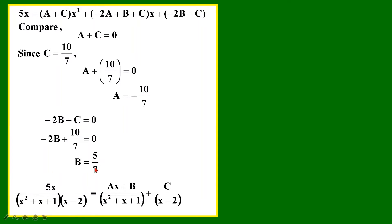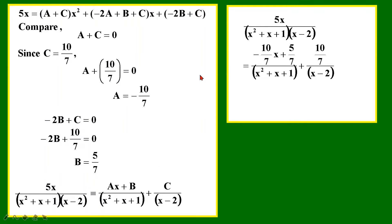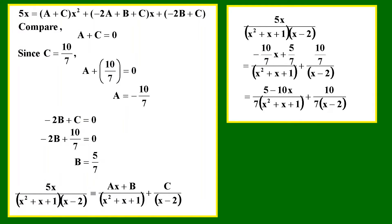Once that is done, I fill in the partial fraction equation. The place for a is negative 10 over 7, the place for b is 5 over 7, and the place for c is 10 over 7. Then I bring the denominator down and tidy the form. Because of the minus sign, I end up with 5 minus 10x over the quadratic factor, plus 10 over 7 over (x minus 2). I'm done for this question.